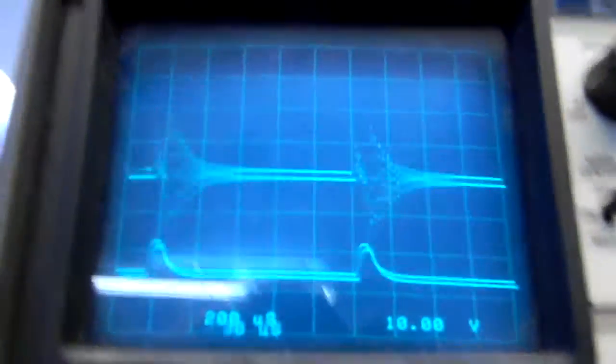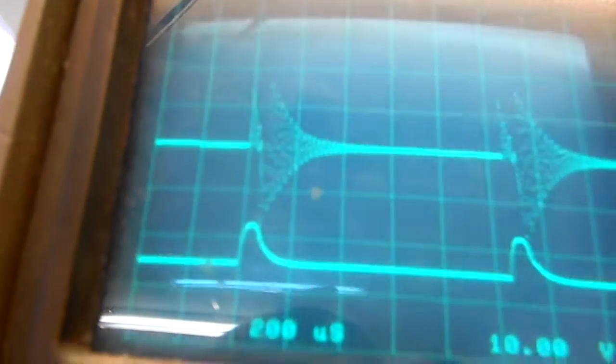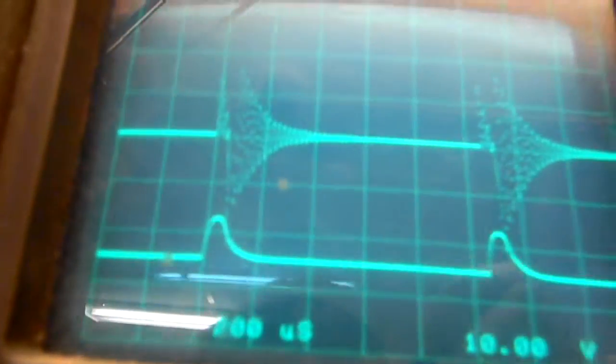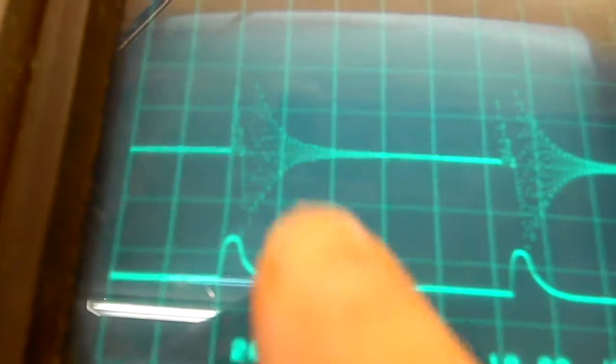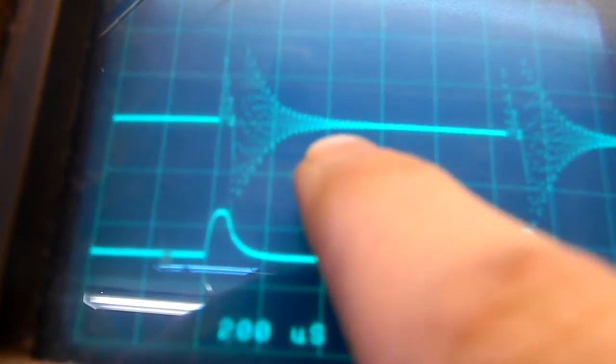So this is the damped waveform of the conventional rodent coil. Right, so we can see 200 microseconds per division. Most of our oscillations die out after about 400 microseconds.